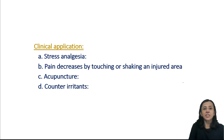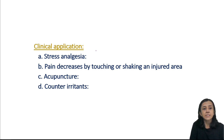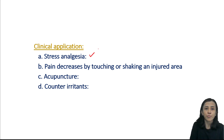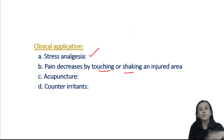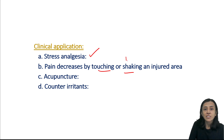Clinically, applications of spinal or segmental inhibition include: first, stress analgesia — suppose a soldier wounded in battle is under stress and does not feel pain due to sympathetic overactivity. Second, pain is decreased when you touch or shake an injury area because large fibers (A-alpha, A-beta) are stimulated, which inhibits pain sensation.